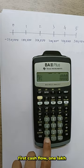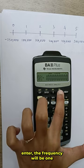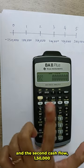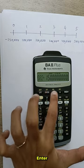First cash flow 1 lakh, enter. The frequency will be 1 and the second cash flow 1 lakh 50,000, enter.